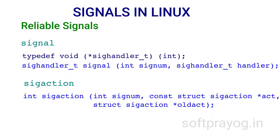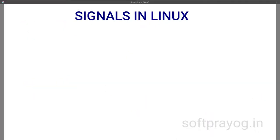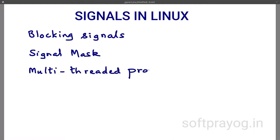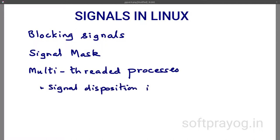Blocking signals: signals can come anytime, but there are times when we do not want our process or thread to get interrupted — one obvious case is when a thread is setting signal handlers. A process can block signals. A signal mask is a set of currently blocked signals for a thread.